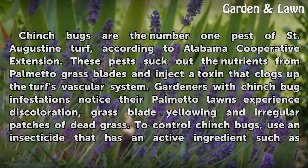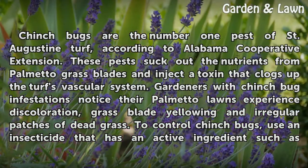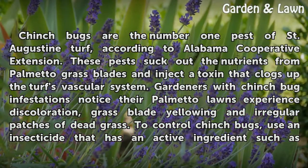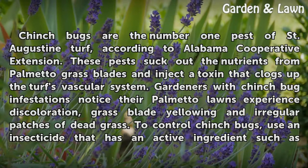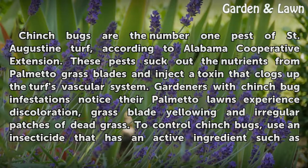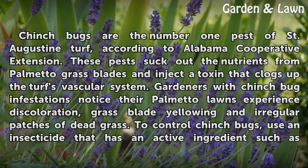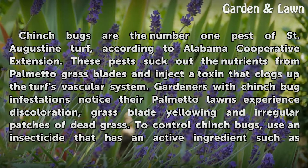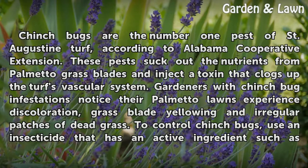Chinch bugs suck out the nutrients from palmetto grass blades and inject a toxin that clogs up the turf's vascular system. Gardeners with chinch bug infestations notice their palmetto lawns experience discoloration, grass blade yellowing, and irregular patches of dead grass.